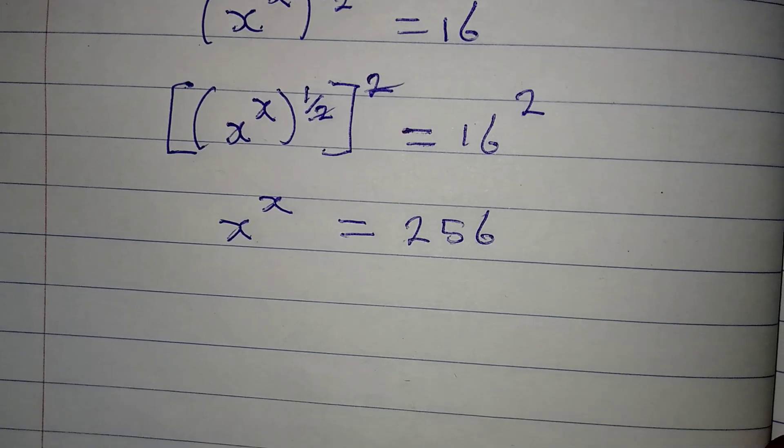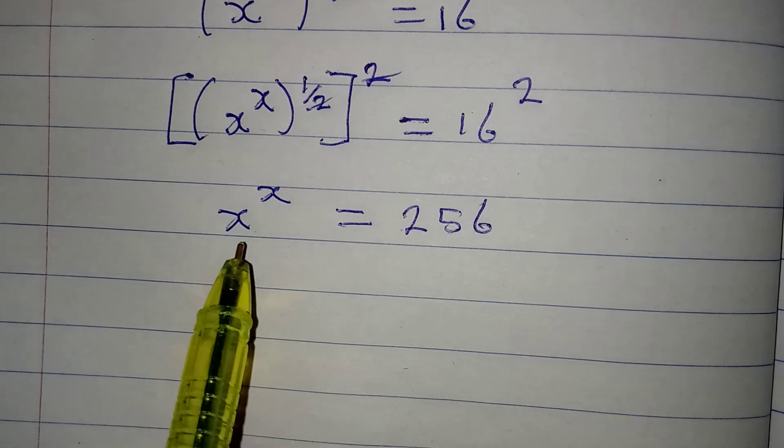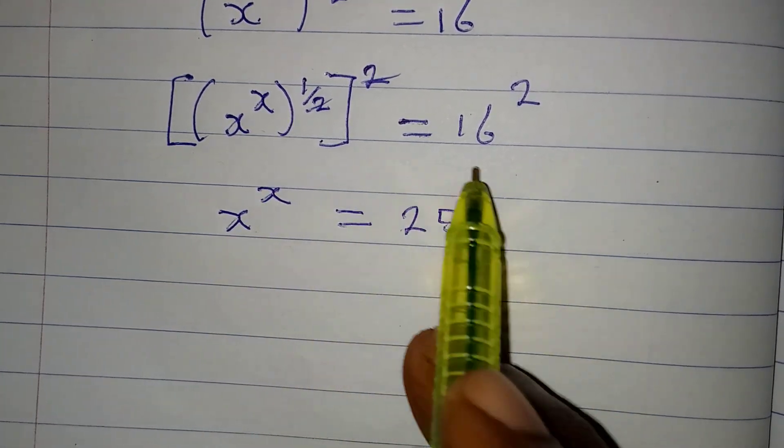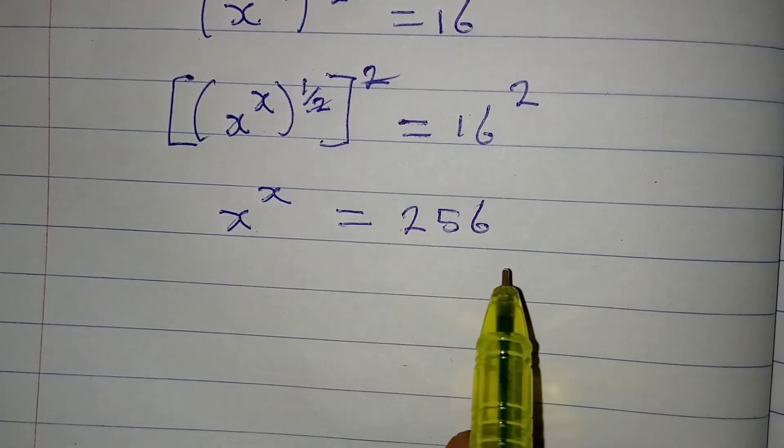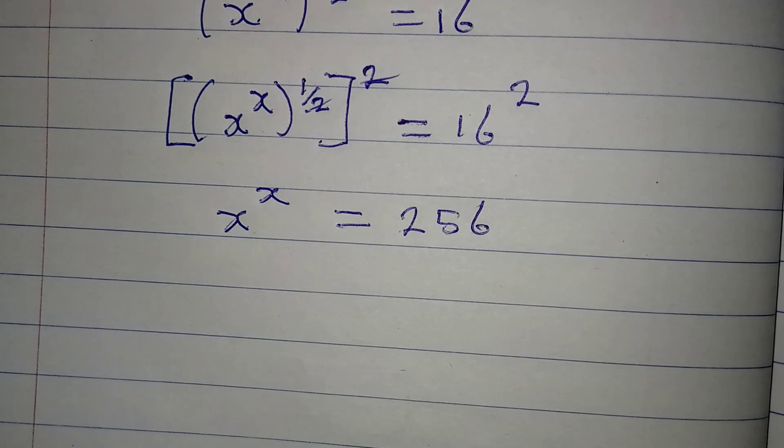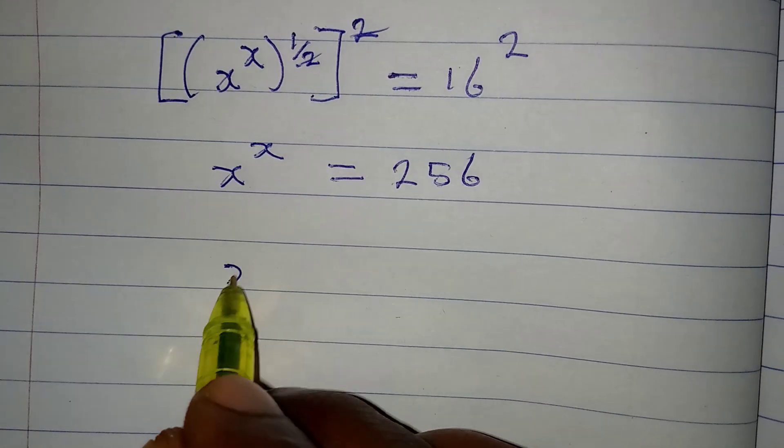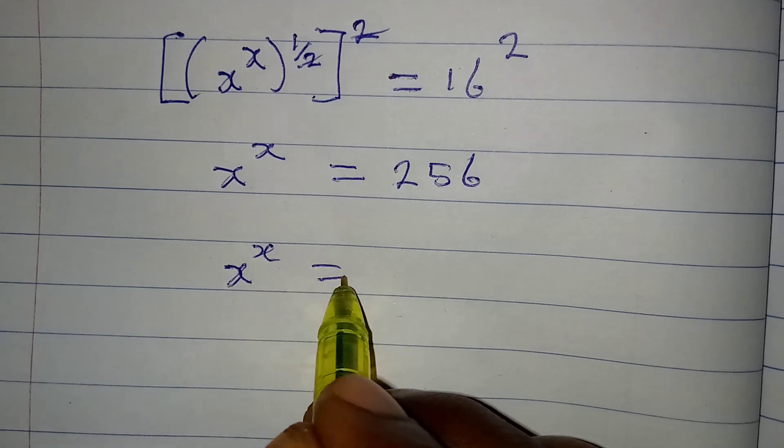But then there's something we'll try to do now. We want to get here, we have x^x right now. We want to make sure that this gives us something that is comparable to x to the power of x. Now let's look at what I will do: x to the power of x will be equal to this.